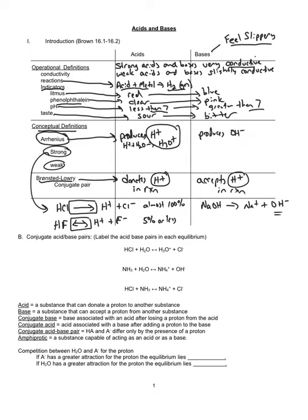The next thing is to look at an acid-base reaction and label who is the acid and who is the base. Looking at the first reaction — HCl and H₂O as reactants — you should be able to identify that HCl gives H₂O an H⁺. Because HCl donates the H⁺, based on Bronsted-Lowry's definition, HCl is classified as the acid. Water is classified as the base because it accepted the proton.